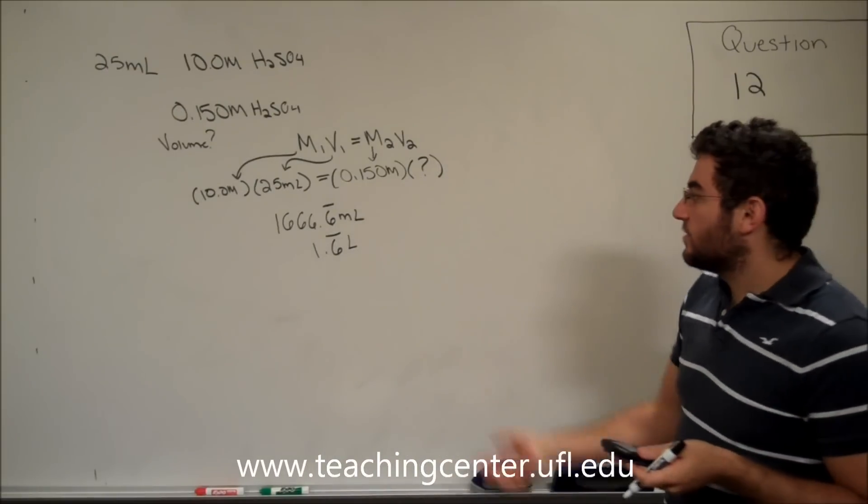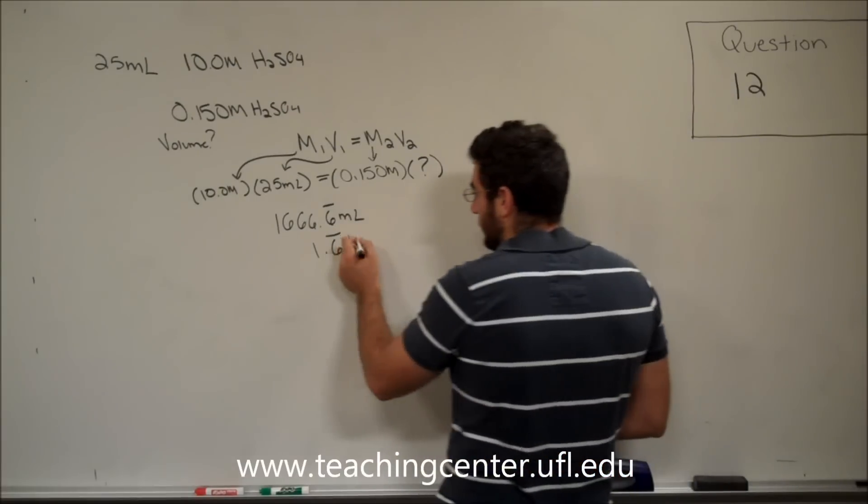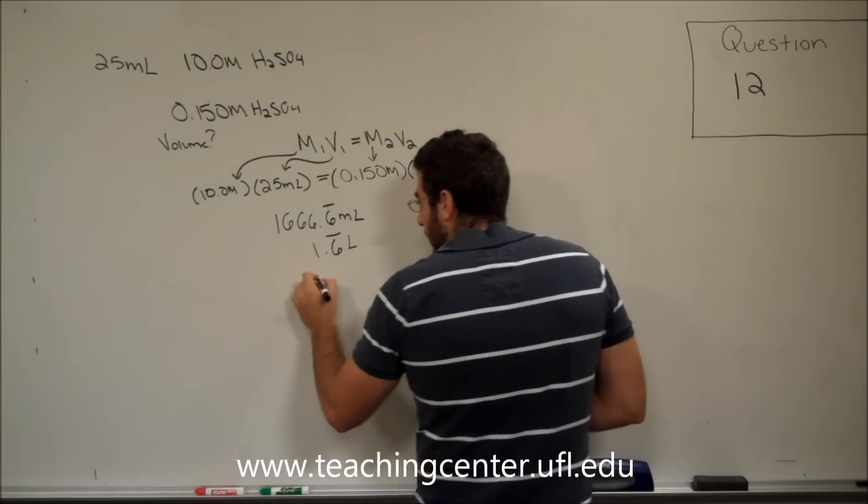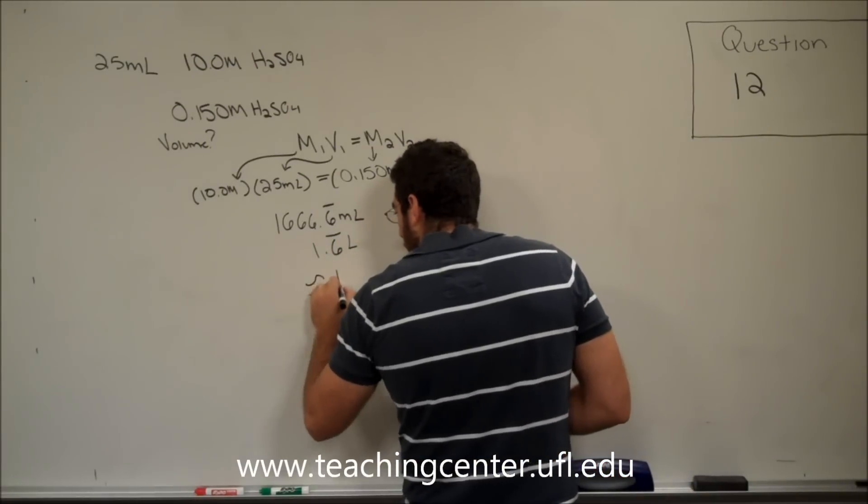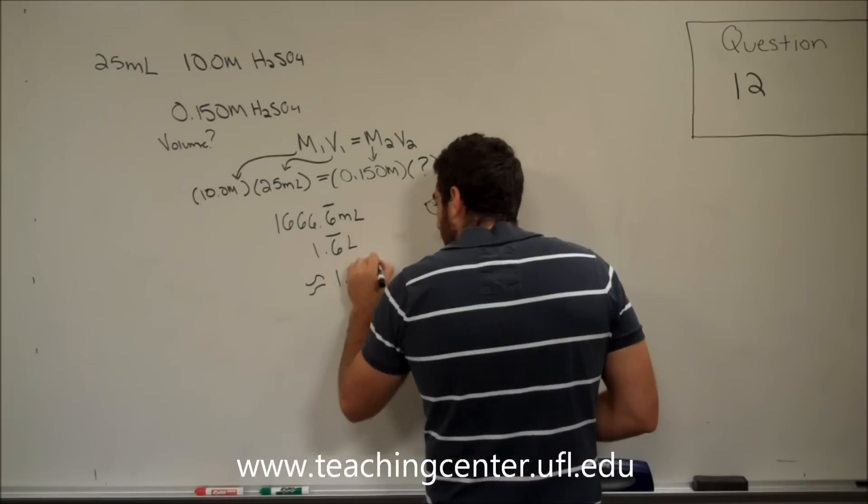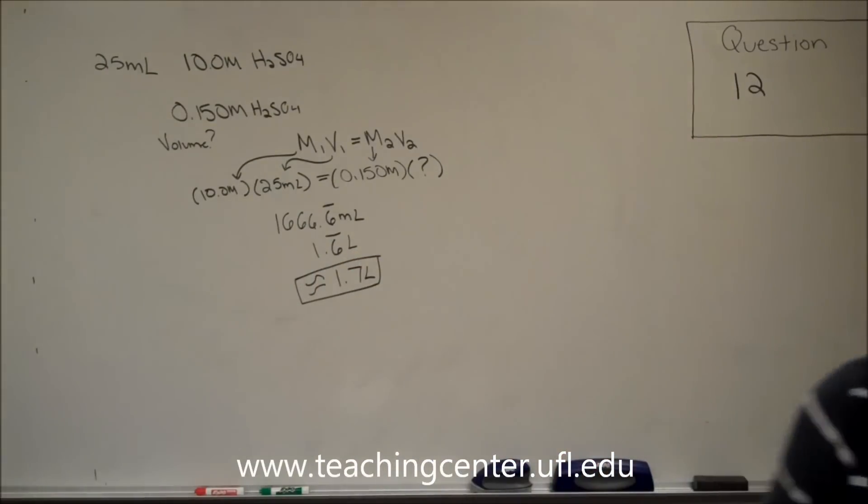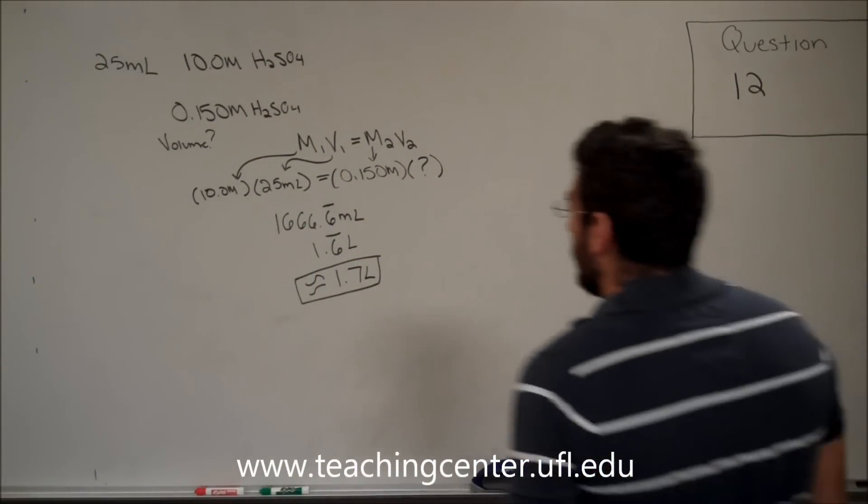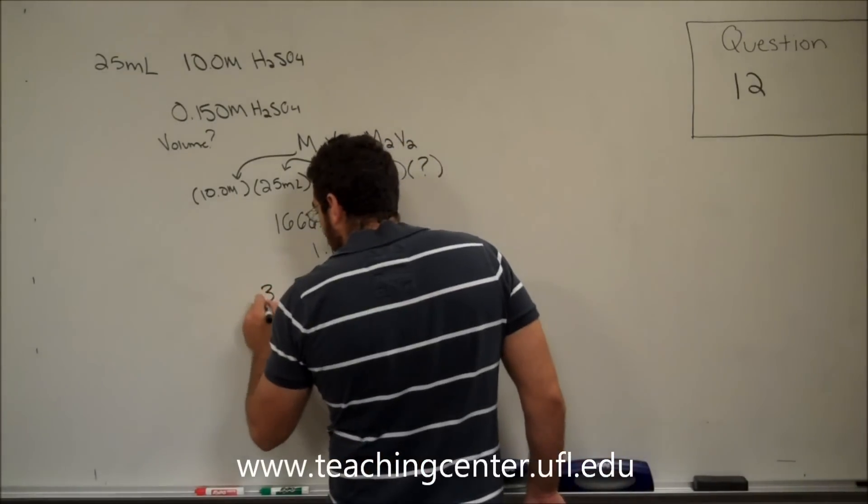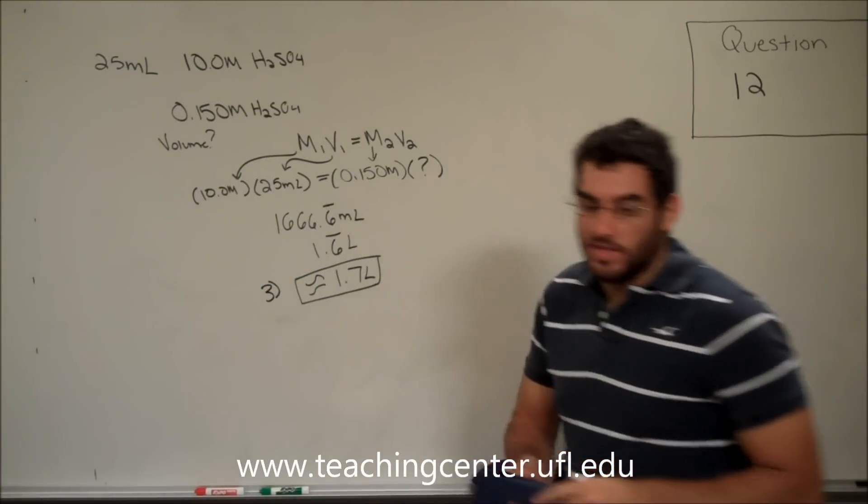1.6 rounds up to 1.7 because we have so many sixes. So, we have approximately 1.7 liters as our final volume. And we can go ahead and look.